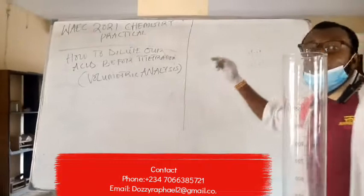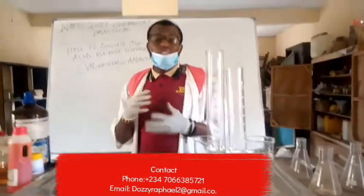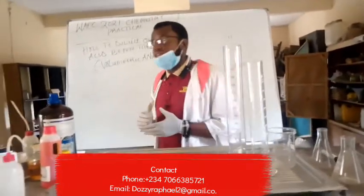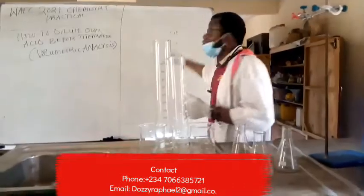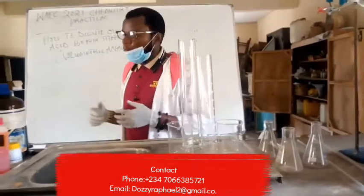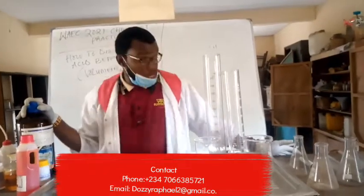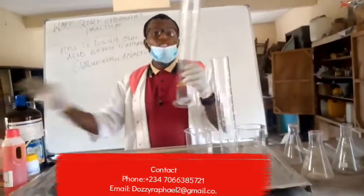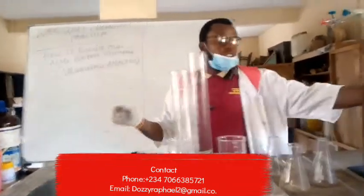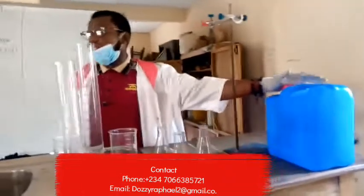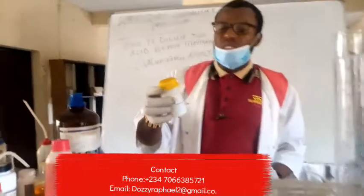A is our acid. We need to prepare this acid so that you can use it for volumetric analysis — that is, titration. In a subsequent class, we'll look at how to dilute our base, which is sodium hydroxide. But today I'll be looking at how to dilute our acid. This is my HCl and measuring cylinder — 1000 ml and 500 ml. This is our distilled water.